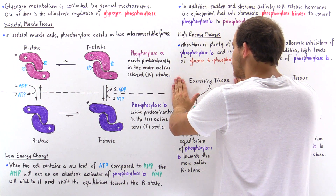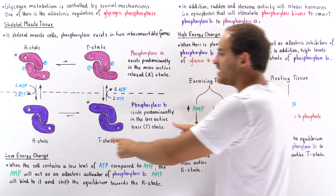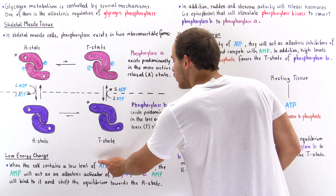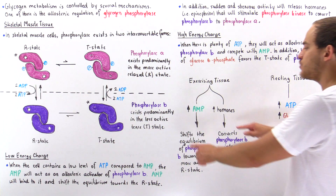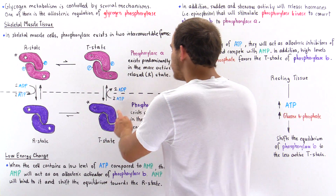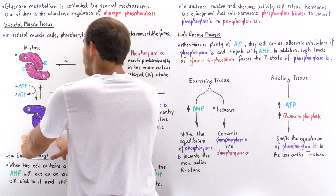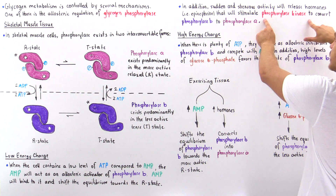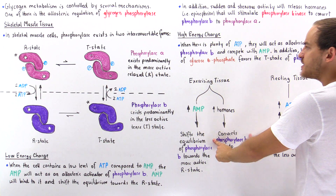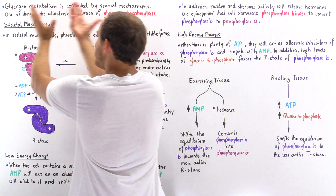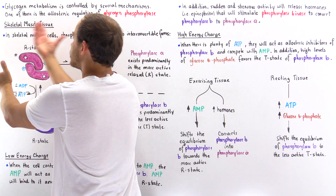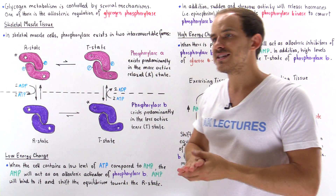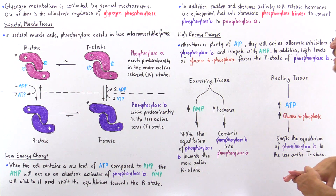So when our cells are exercising, we have a low energy charge value — low ATP relative to AMP. The high AMP shifts the equilibrium of phosphorylase B to the R state, making it more active. On top of that, hormones stimulate phosphorylase kinase to transform phosphorylase B into phosphorylase A, which automatically exists predominantly in the R state, so glycogen is broken down much more readily into glucose to form ATP via glycolysis.